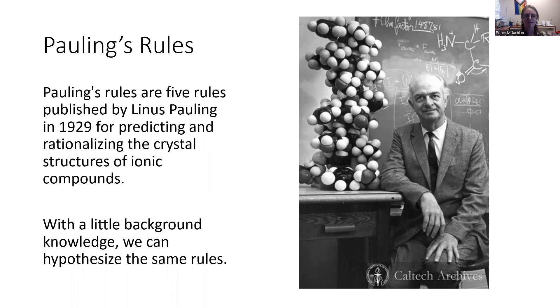Linus Pauling came up with five crystal rules in 1929 for predicting the crystal structures and ionic compounds. But even with a little background knowledge, we can hypothesize these same rules, and most of them are pretty logical.